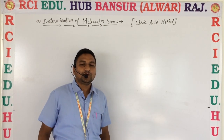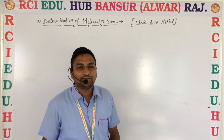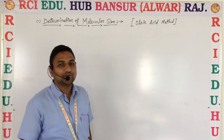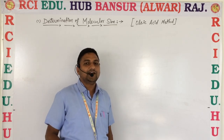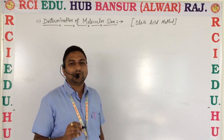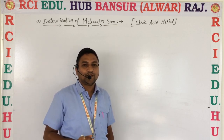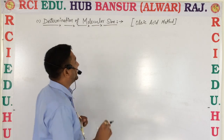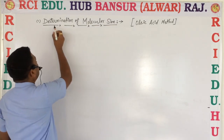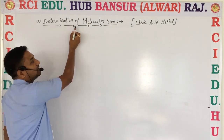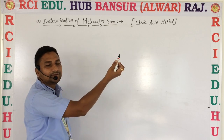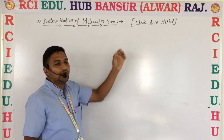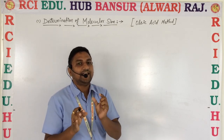Hello students, welcome to RCI online classes. For online admission you can call, message, and WhatsApp 9001455881. Today we are studying physics. Our next topic is determination of molecular size — determination of molecular size means the method used to measure the very small size of molecules.